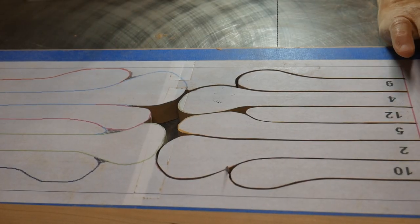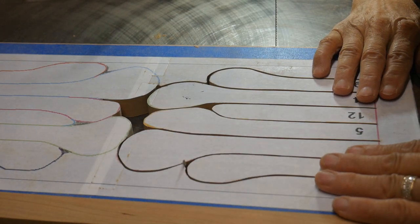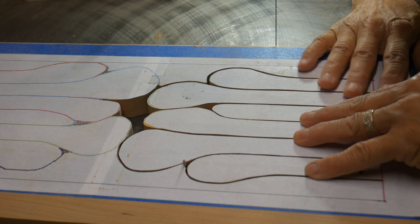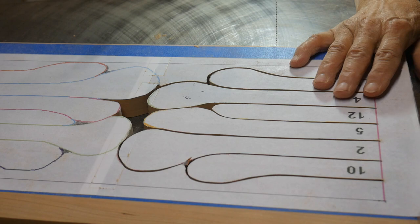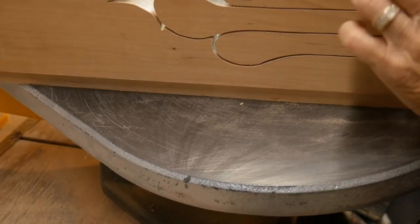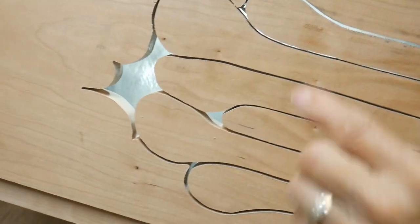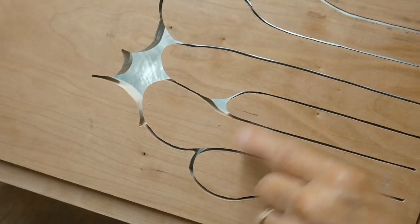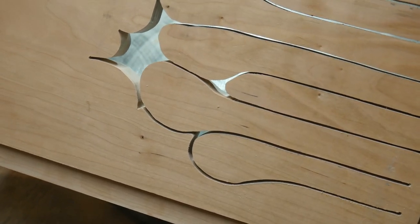I mentioned at the beginning of this video that you could use a jigsaw to cut this out and it would be quicker, but it would be a lot rougher and a lot more repair work to make it smooth. Look how smooth this is. Very little sanding, very little repair work on the bottom.